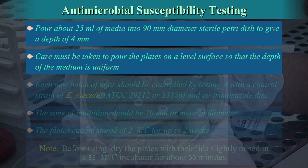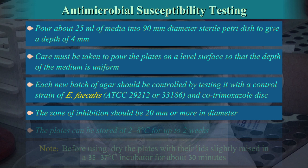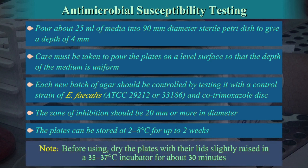Care must be taken to pour the plates on a level surface so that the depth of the medium is uniform. Each new batch of agar should be controlled by testing it with a control strain of Enterococcus faecalis ATCC 29212 and a cotrimoxazole disc. The zone of inhibition should be 20 mm or more in diameter. The plates can be stored at 2 to 8 degrees centigrade for up to 2 weeks. Before using, dry the plates with their lids slightly raised in a 35 to 37 degrees centigrade incubator for about 30 minutes.